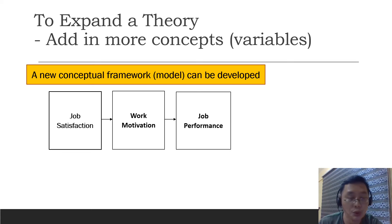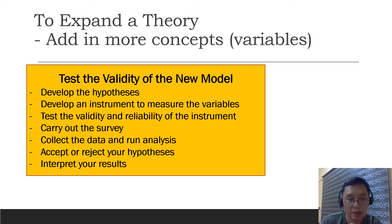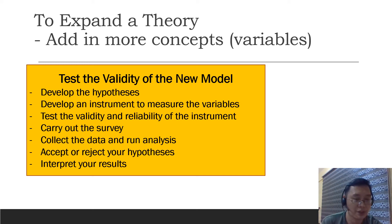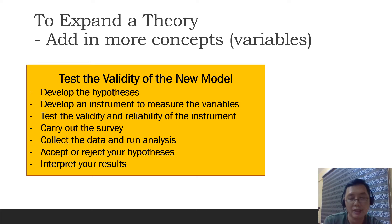Once you have this conceptual framework, you test the new model. From the conceptual framework, you develop hypotheses for the three variables: job satisfaction has a significant positive relationship with work motivation, and work motivation has a significant positive relationship with job performance. Then you develop an instrument to measure the three variables. Before using the instrument, you test its validity and reliability. Then you carry out the survey, collect the data, run the analysis, and come up with decisions on whether to accept or reject the hypotheses, and then you interpret the results.